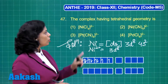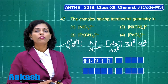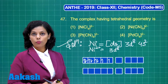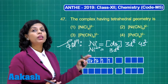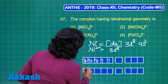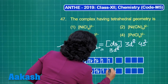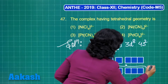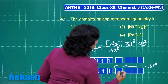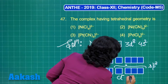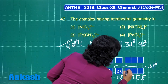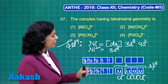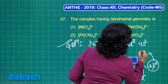CN⁻ is a strong field ligand, while Cl⁻ is a weak field ligand. The weak field ligand chloride is not able to cause pairing in the d orbitals of nickel. So the hybridization that occurs is sp3. The chloride ligands occupy these sp3 hybrid orbitals, resulting in tetrahedral geometry.